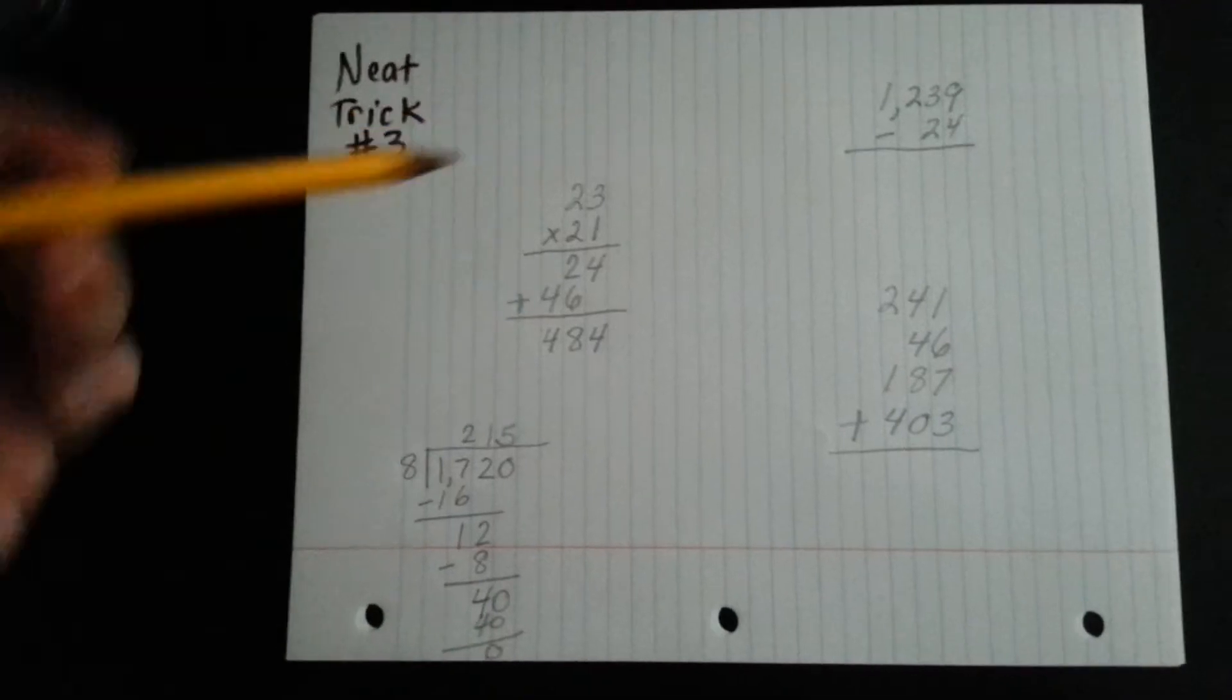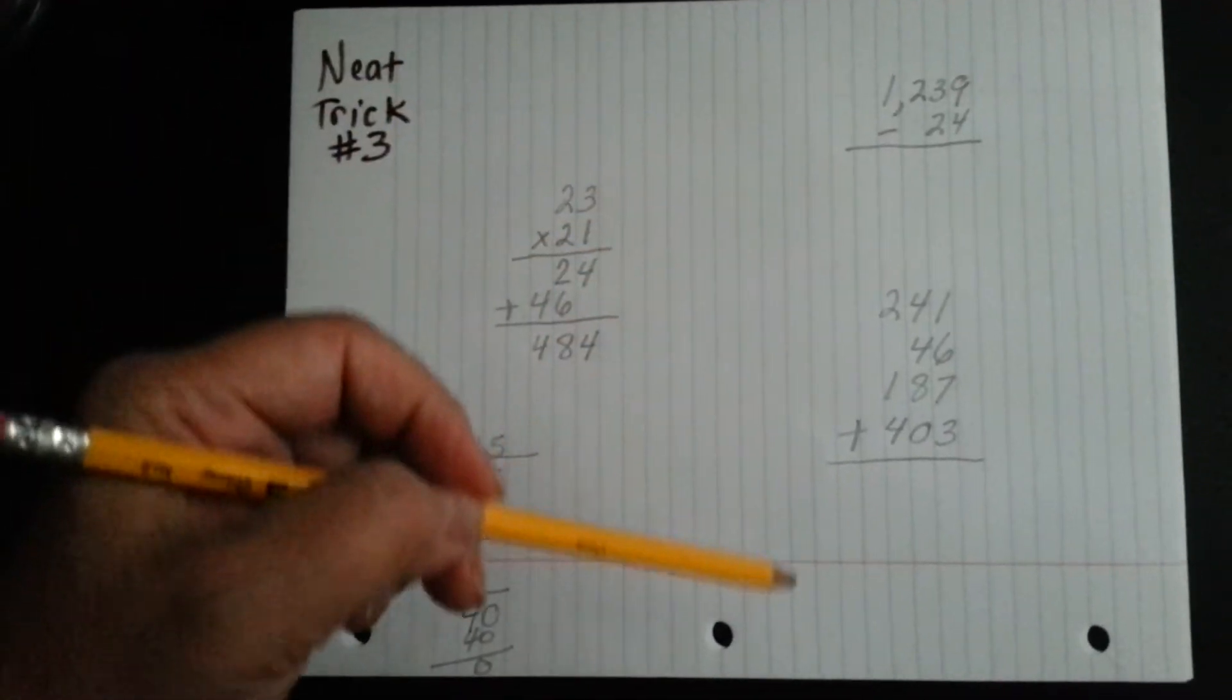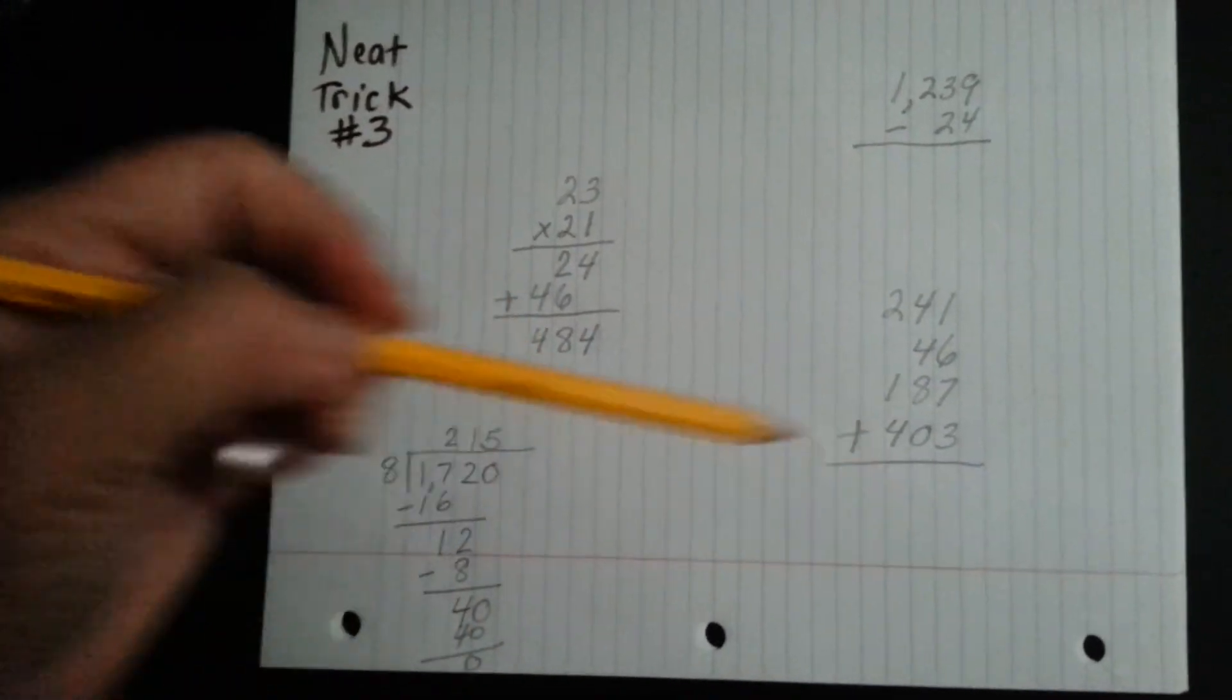By having your paper go this way, it automatically gives you the columns that you would need to put your numbers in.